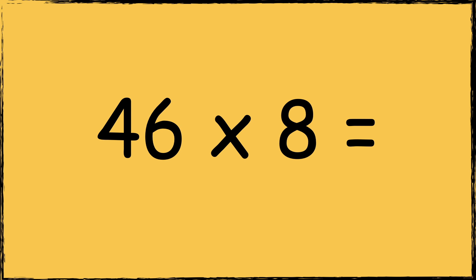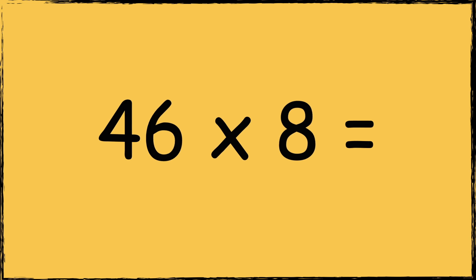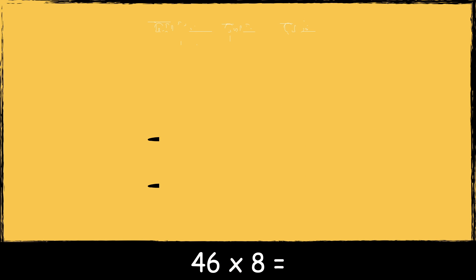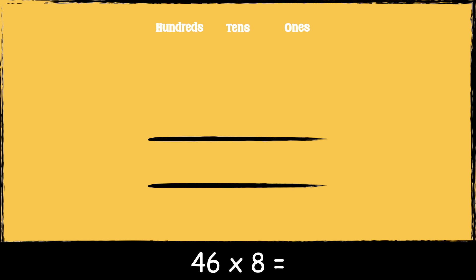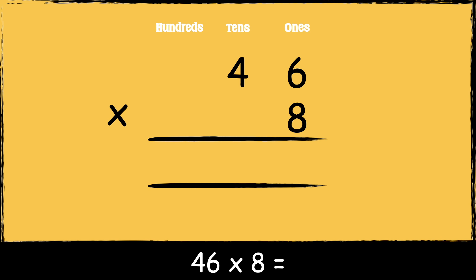Here is the last example: forty-six times eight. First we make sure the numbers are lined up accurately. The number forty-six has six ones and it has four tens. The number eight has eight ones. So now that we're set up, we're ready to multiply. First we're going to multiply eight by six: eight times six is forty-eight. We carry the four below in the tens column as it represents four tens.